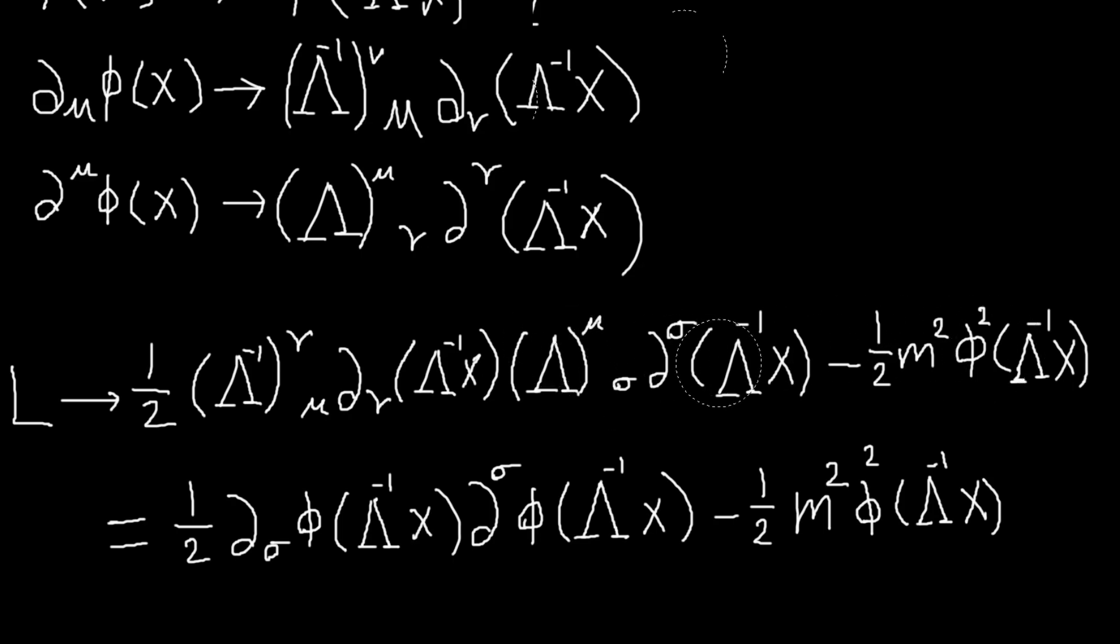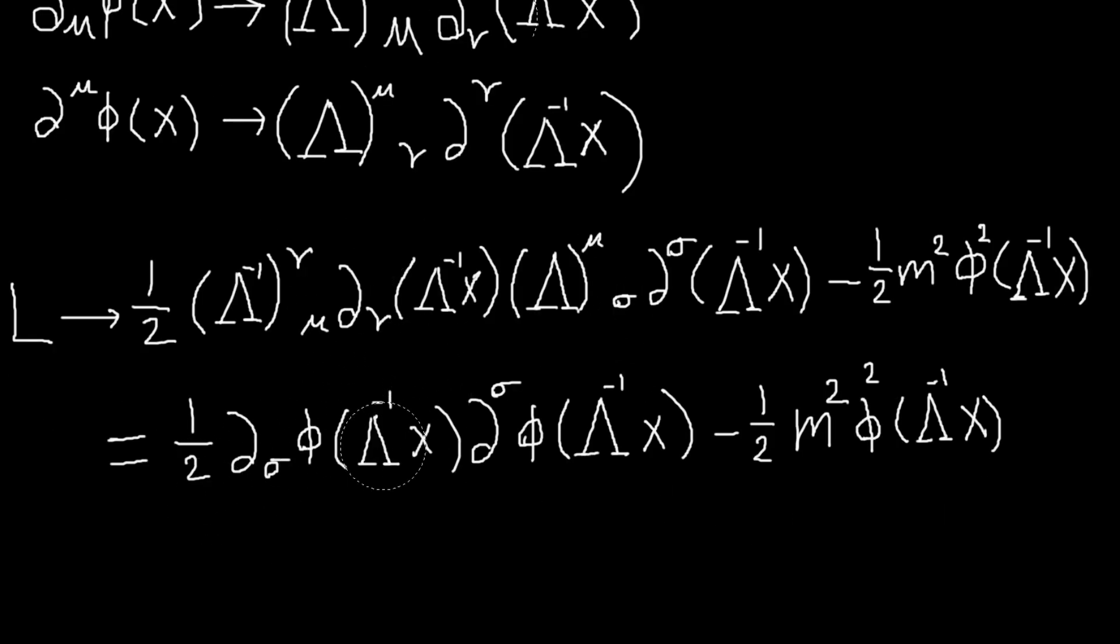And we just have an inverse lambda and a lambda, and they will multiply each other. So we just get a Kronecker delta nu sigma. And so I'll just make this nu a sigma, and so our Lagrangian will become this.